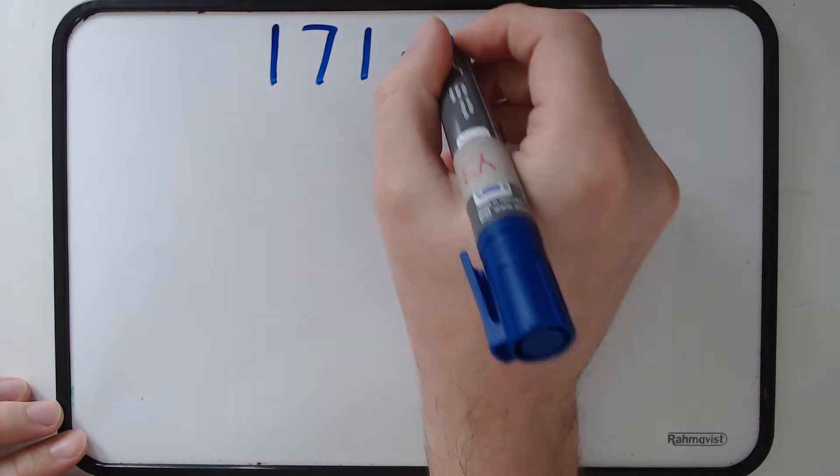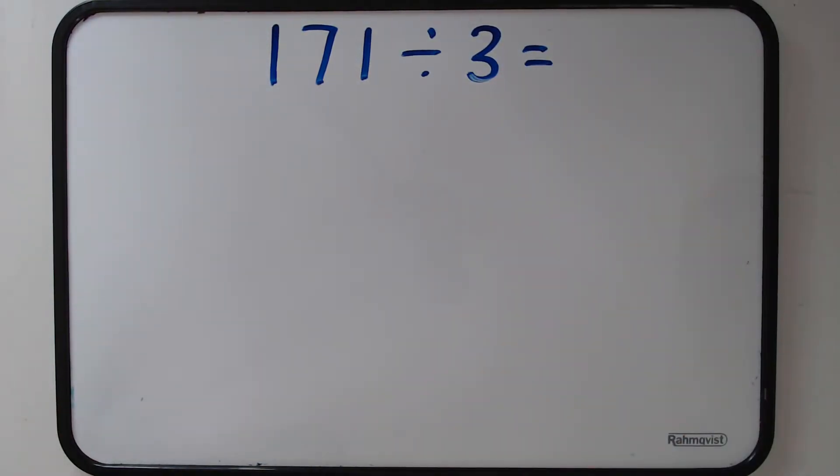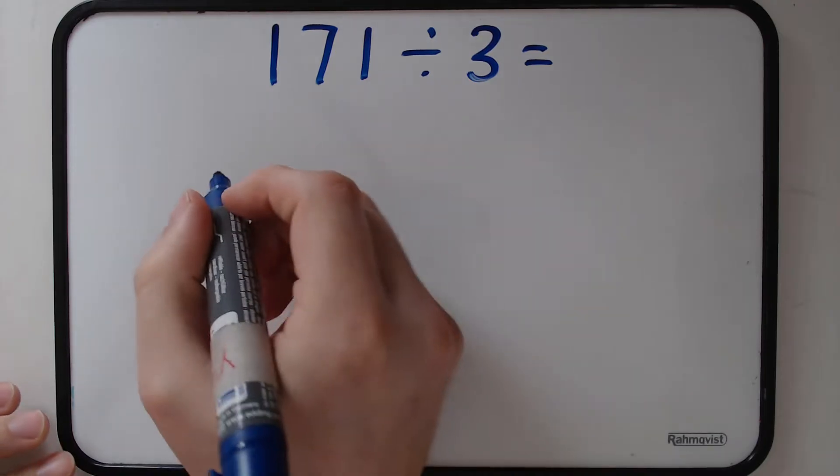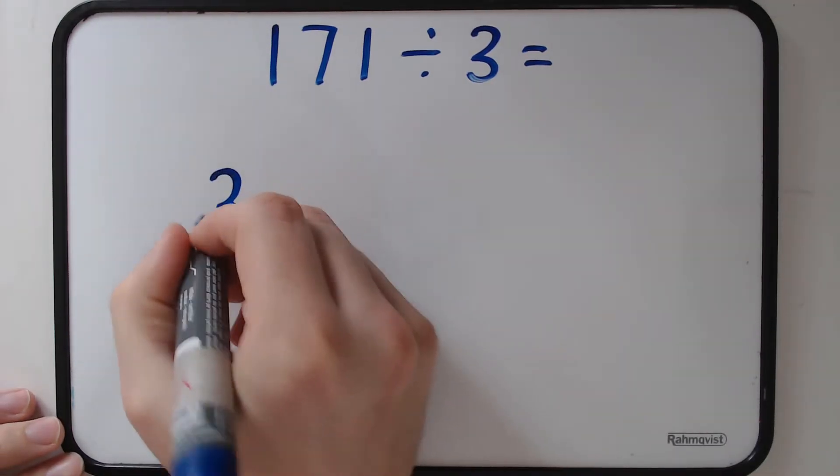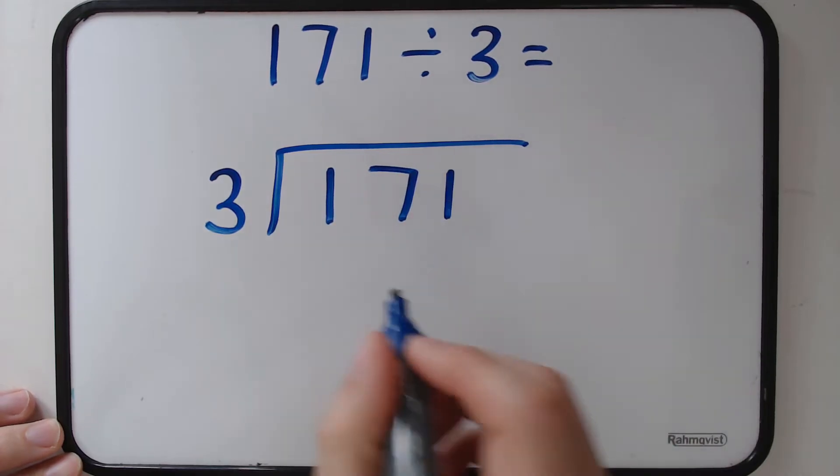In the first example we're going to use a single digit number just to show how it works and how to lay it out. So we're doing 171 divided by 3. I'm going to lay this out in our division method. So we've got 3 on the outside and we've got 171 on the inside.